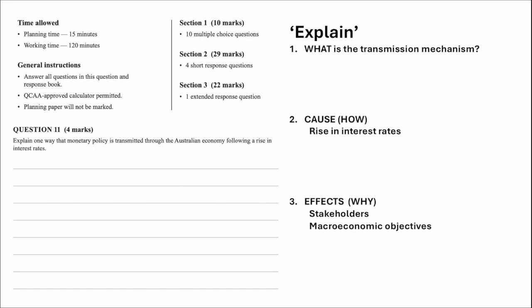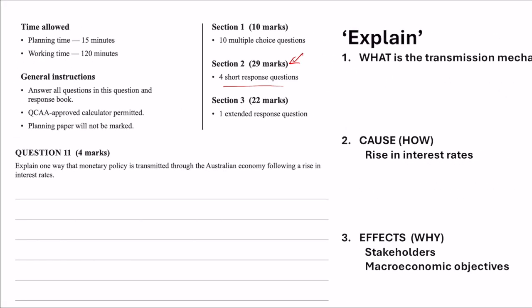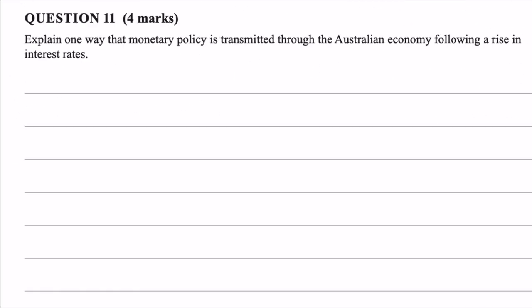In the 2023 paper, there were four short response questions worth 29 marks, basically half the paper. The question we're looking at today: explain one way that monetary policy is transmitted through the economy following a rise in interest rates.